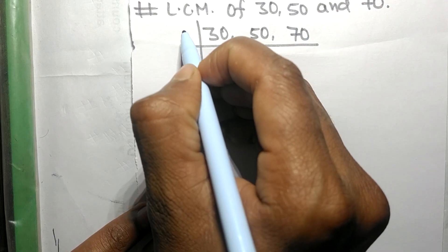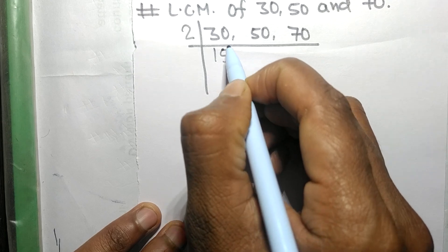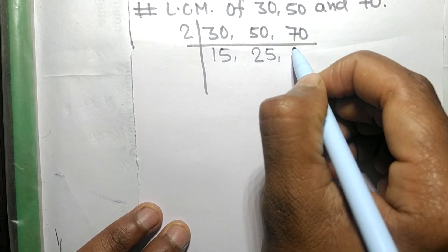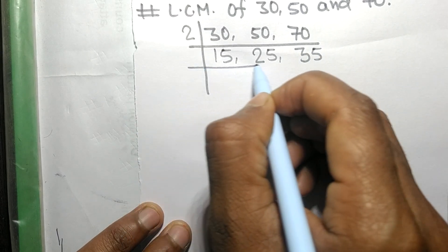So 2 times 15 means 30, 2 times 25 means 50, 2 times 35 means 70. Now these all numbers are exactly divisible by 5.